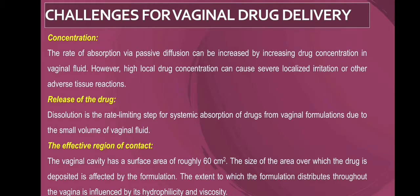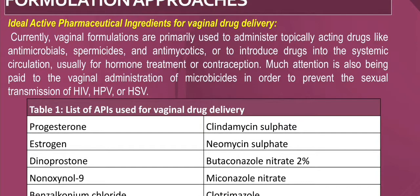Regarding region and area of contact, the surface area is very limited at roughly 60 cm². The drug deposition is affected by the formulation, and the extent to which the formulation distributes throughout the vagina is influenced by hydrophilicity and viscosity. The ideal APIs administered include antimicrobials, spermicides, anti-mitotics, and drugs introduced into systemic circulation for hormonal treatment or contraception, such as progesterone, estrogen, dinoprostone, nonoxynol-9, benzalkonium chloride, clindamycin sulfate, neomycin sulfate, butoconazole nitrate, miconazole nitrate, and clotrimazole.